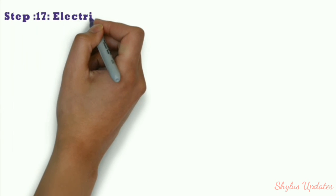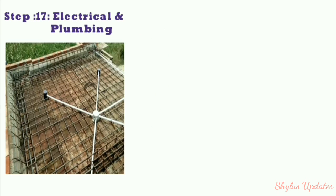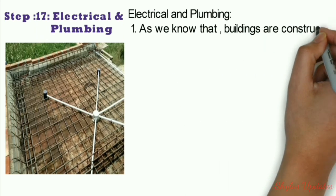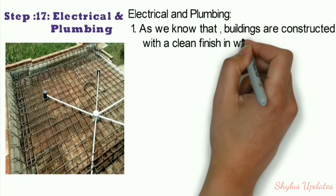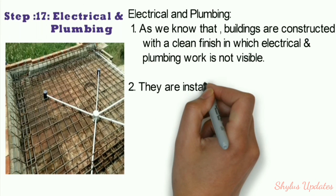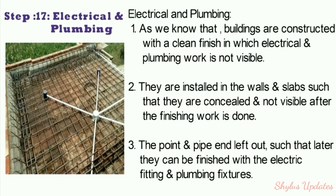Step 17: Electrical and plumbing. Buildings are constructed with a clean finish in which electrical and plumbing work is not visible. They are installed in walls and slabs, concealed and not visible after finishing work is done. Pipe ends and points are left out so that later they can be finished with electrical fittings and plumbing fixtures.